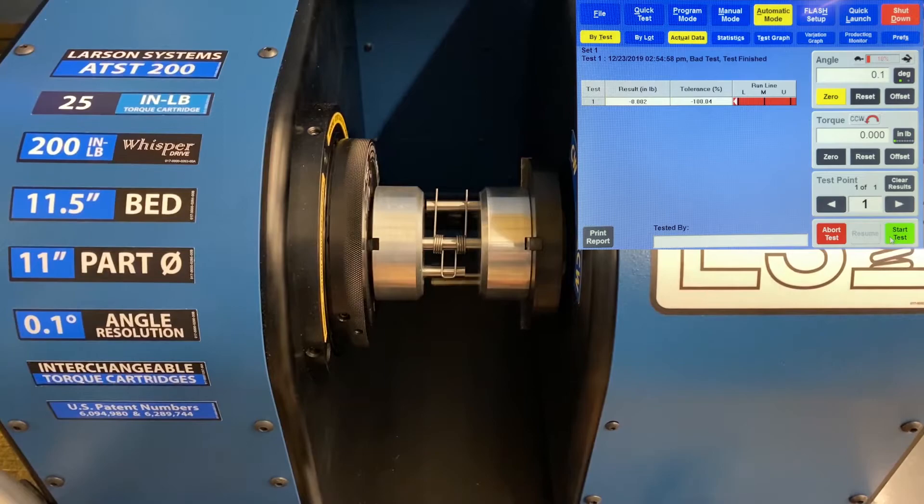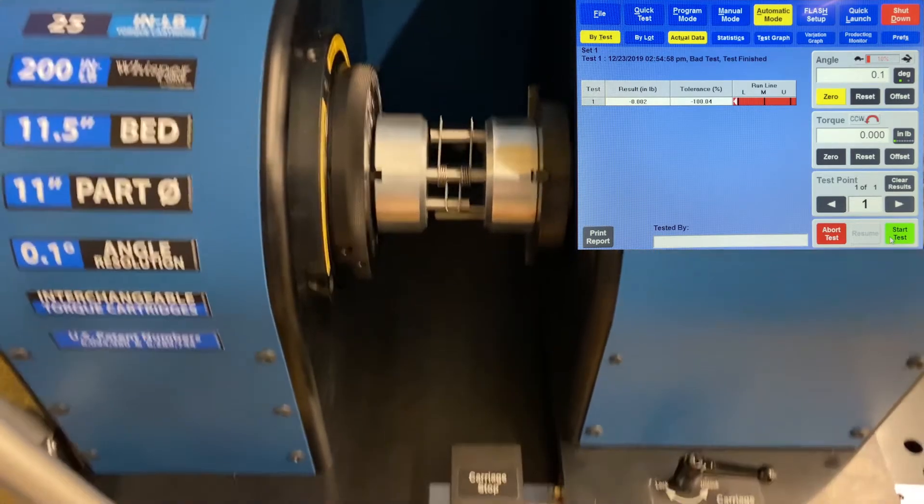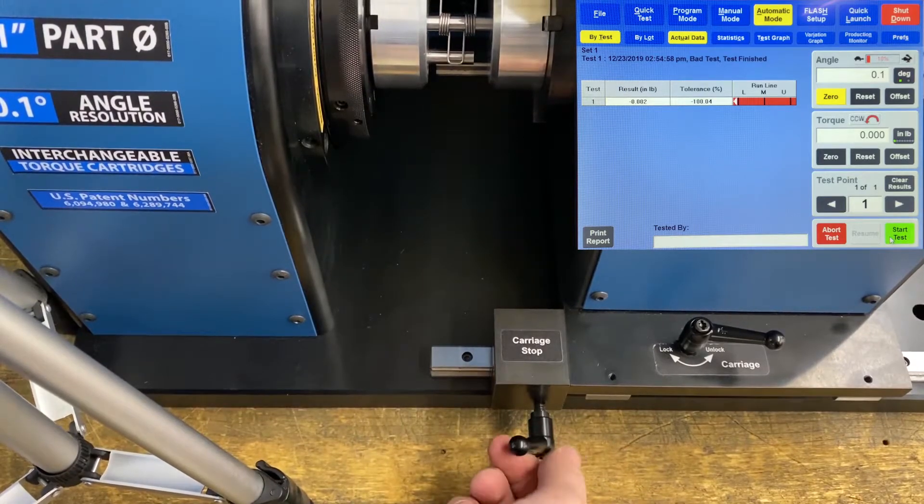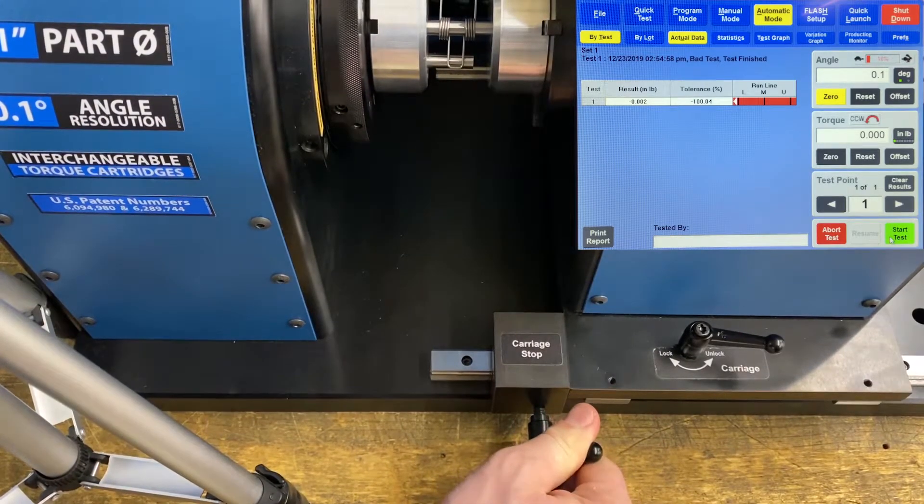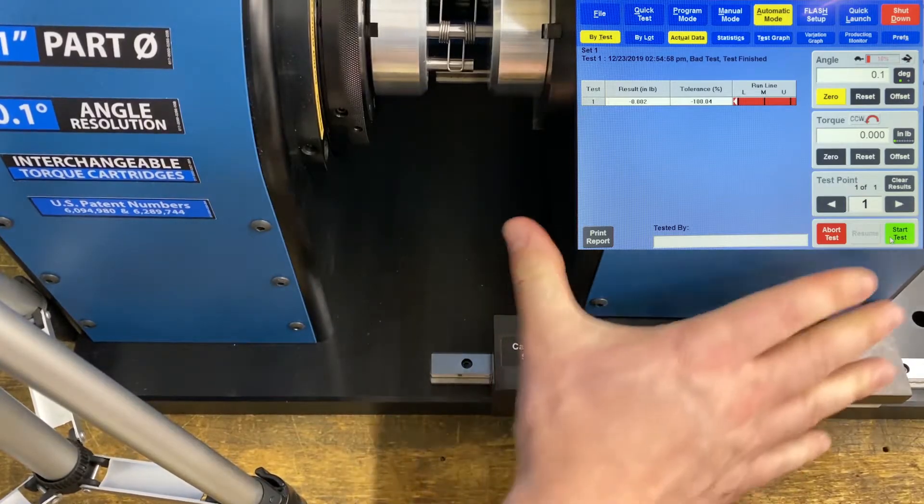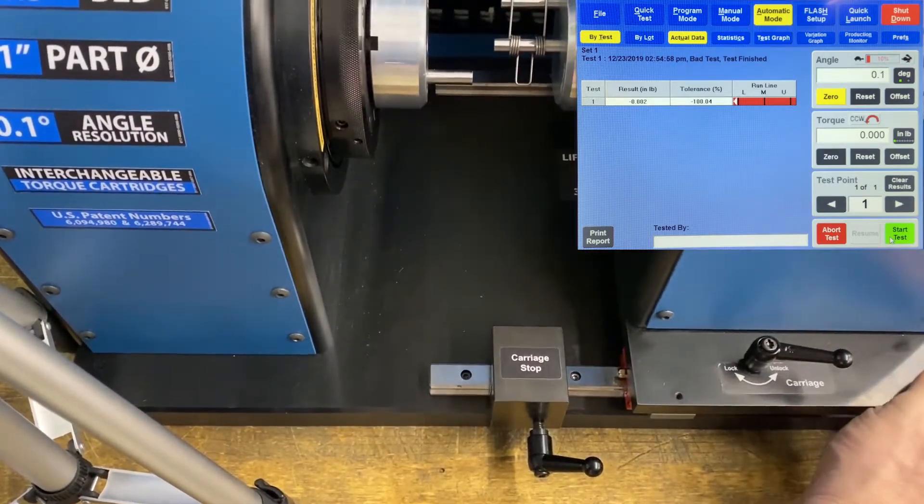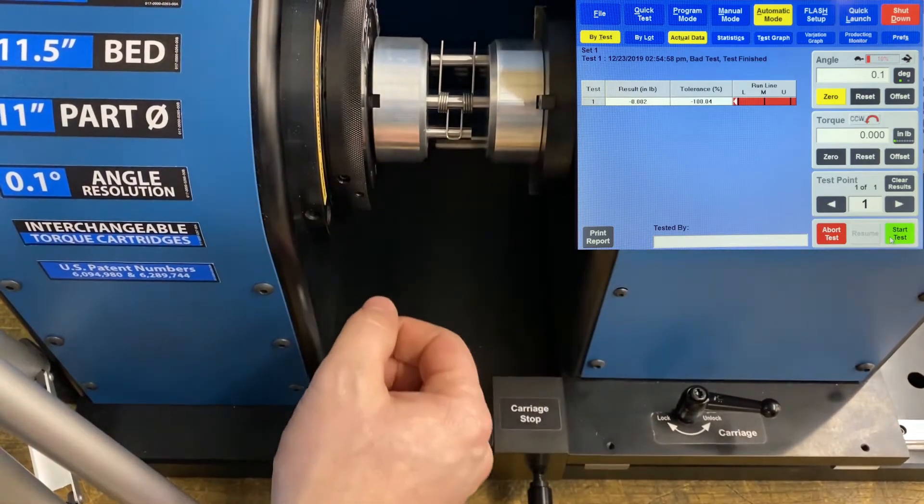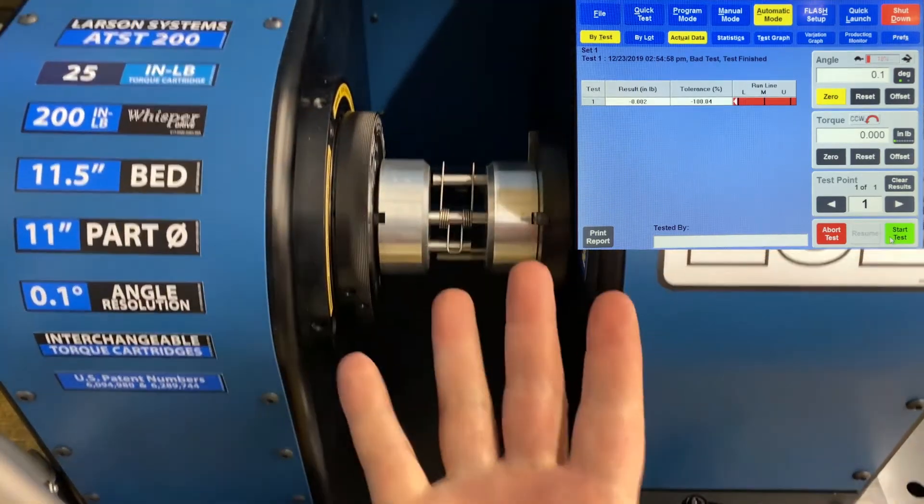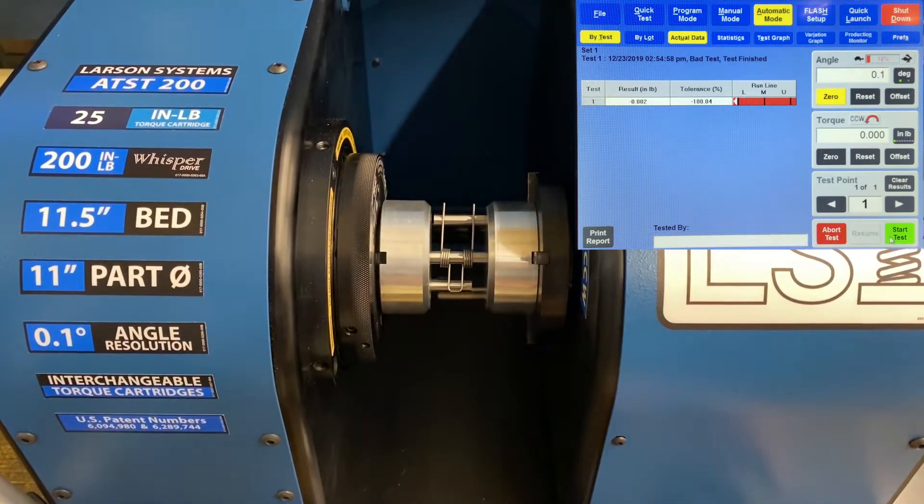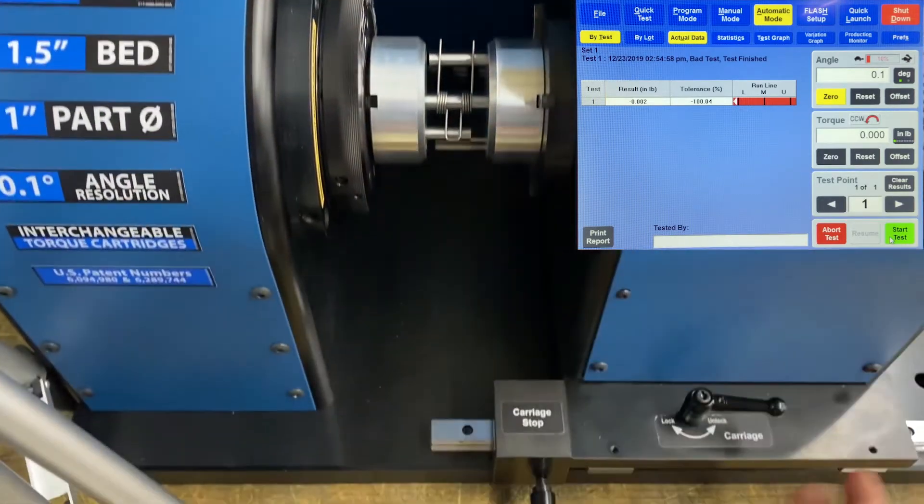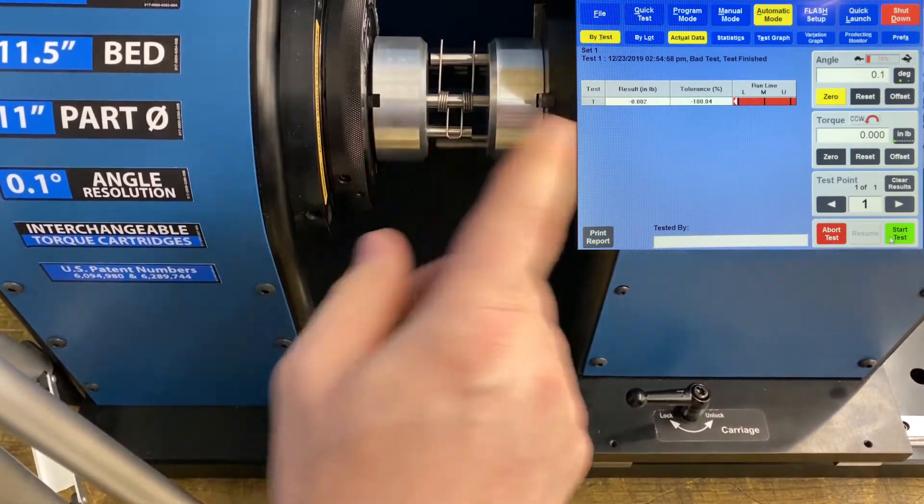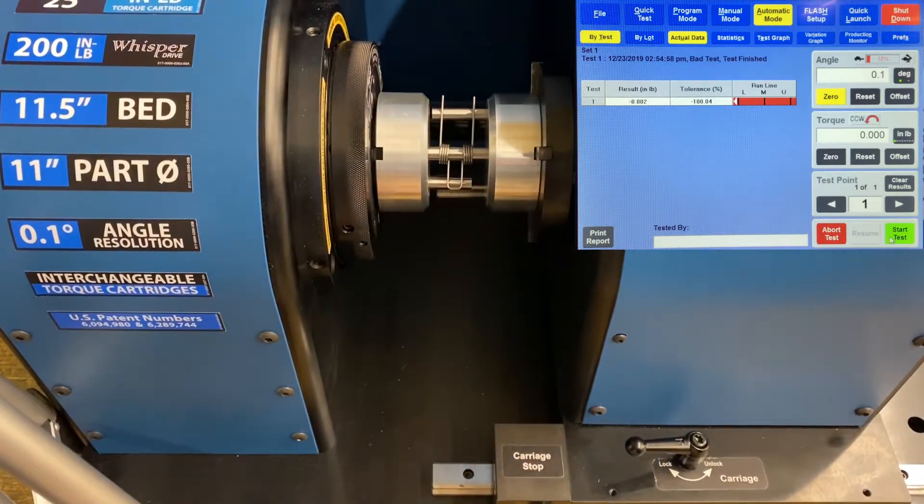So I want to set my carriage stop up to here, so I don't have to just baby it in every single time. I lock that in place, so then when I bring it in, I got something to bump up against, and that's about right where I want it. Then when I perform an actual test, I'm going to lock the tail stock in place using this lock, and then once that's done, then I can hit start.